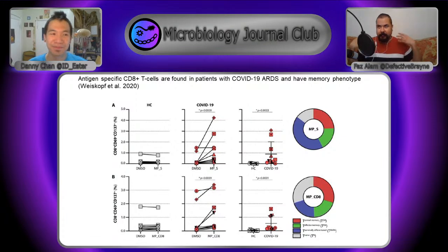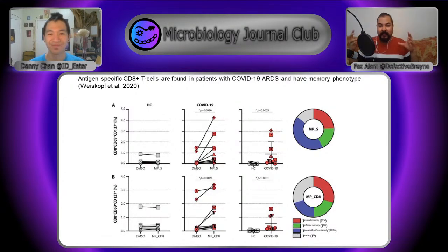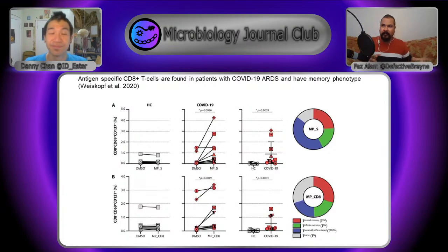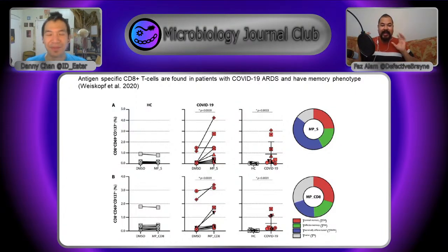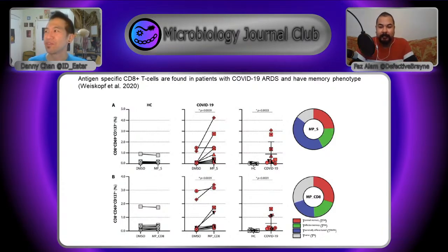CD4 are the T-helper cells — they're almost like the brain of the immune response, communicating with B cells and T-cells and producing chemical messages that help activate them. CD8 T-cells are the fun ones because they kill cells — they're often called effector T-cells.